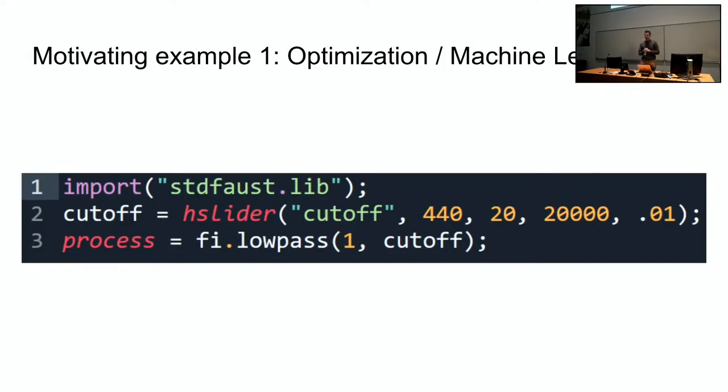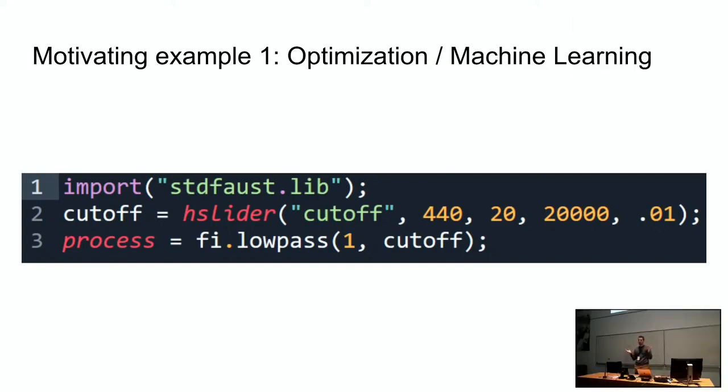A motivating example for the talk today is optimization and machine learning. In this example we have a low pass filter and there is a cutoff. And the cutoff is a value of 440. But what if we don't know that the best value is 440? What if we just have some data set of inputs and outputs and we suspect that the audio is going through a low pass filter in order to produce the output audio? But how do we find out that the magic value of 440 is what transformed the input into the output? And this is where machine learning and optimization can play a role. So I'll be talking about that today.